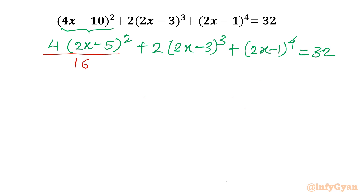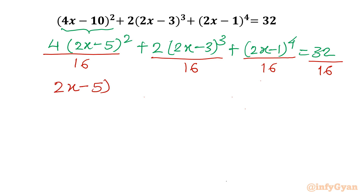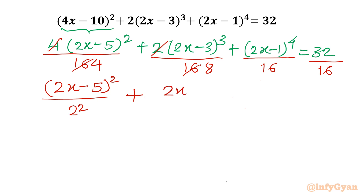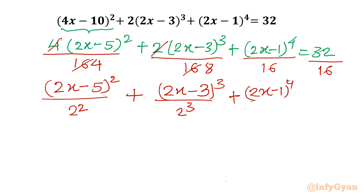See what comes out when we divide by 16. Dividing each term and the RHS by 16: the first term becomes (2x - 5)²/4, the second term becomes (2x - 3)³/8, the third term becomes (2x - 1)⁴/16, and the right-hand side becomes 2.